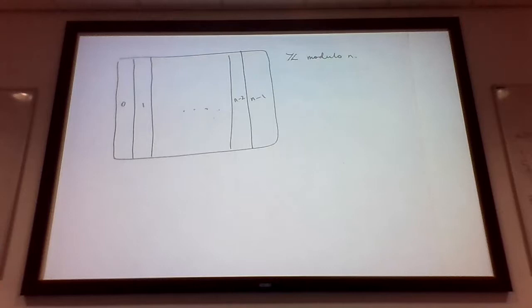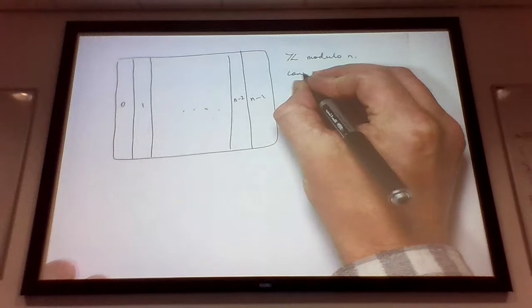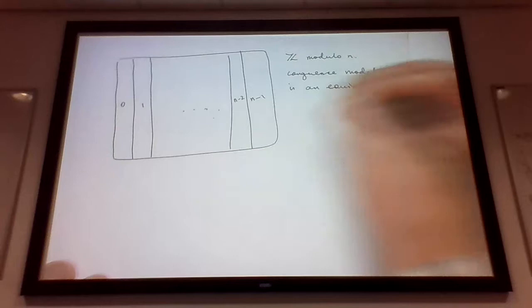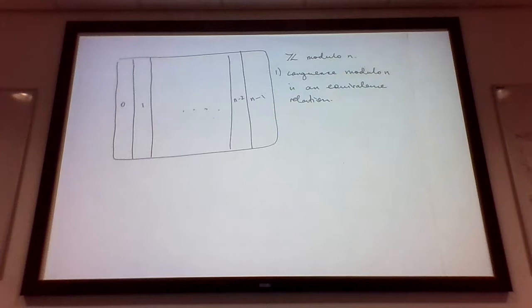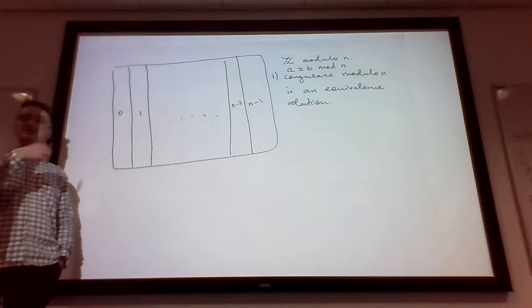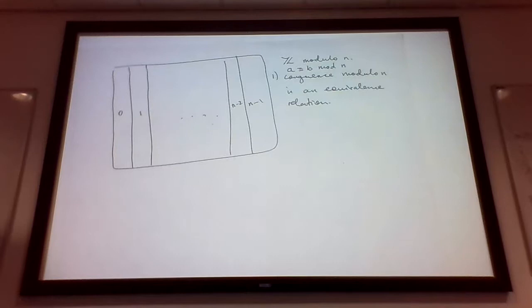Last time we introduced the relation of congruence modulo n amongst the integers. We proved it's an equivalence relation, which means it's symmetric, reflexive, and transitive. If a is congruent to b, b is congruent to a — that's the symmetric property. A is always congruent to itself — that's the reflexive property. And the transitive means if a is congruent to b and b is congruent to c, then a will always be congruent to c.